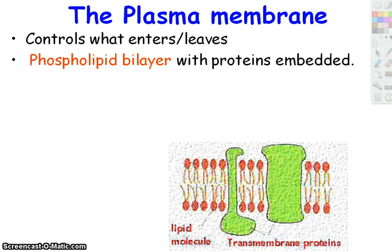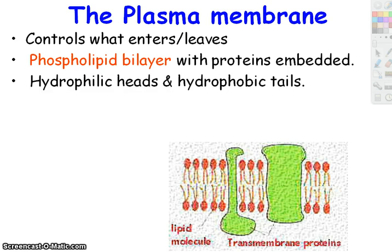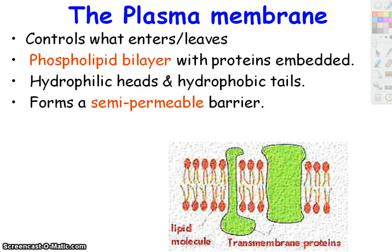The fatty acid tails are wiggly because they're unsaturated, and that's what keeps the cell membrane fluid. The heads — the phosphate parts — are hydrophilic; they like water. Phosphate is PO4 with negative charges, and charged things dissolve well in water. The fatty acid tails are hydrophobic — they don't like water — and this prevents certain things from just passing through, maintaining a selectively permeable or semi-permeable barrier.